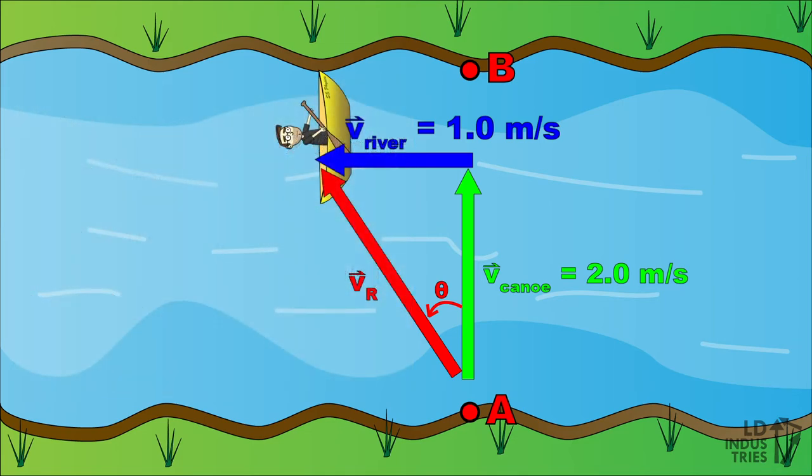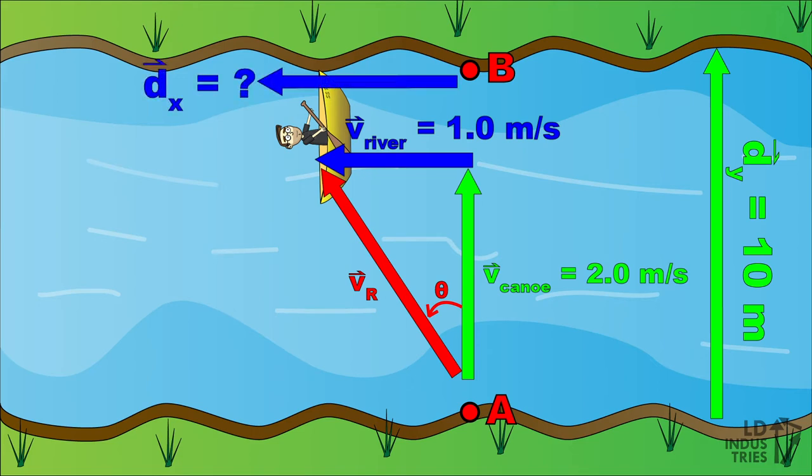So how far down river did we end up? For this, we need the width of the river. Let's say it takes 10 meters to travel from point A to point B. We can add that vertical, or Y displacement vector, to our diagram. Here's the vector that represents the displacement of the canoe going downstream, the horizontal, or X displacement.